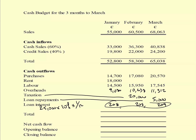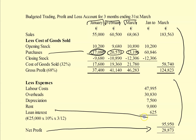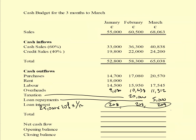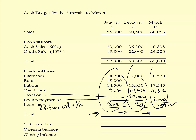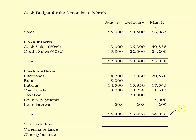The total interest across the three months comes to 625, which matches the income statement figure - so there will be no rounding differences. I then add up the columns to give the total cash outflows for January, February and March.